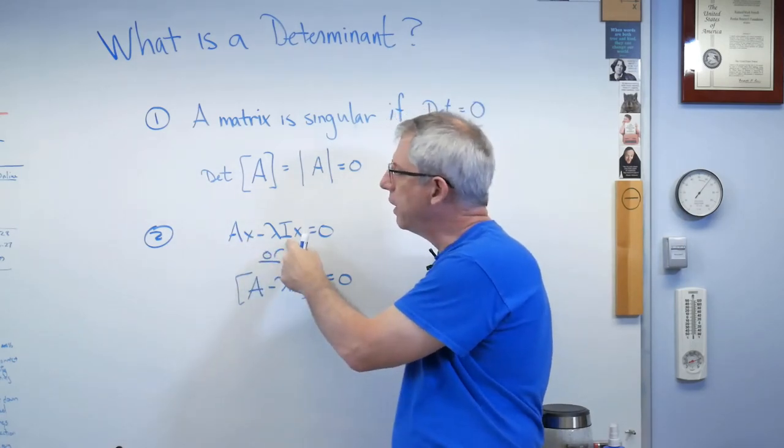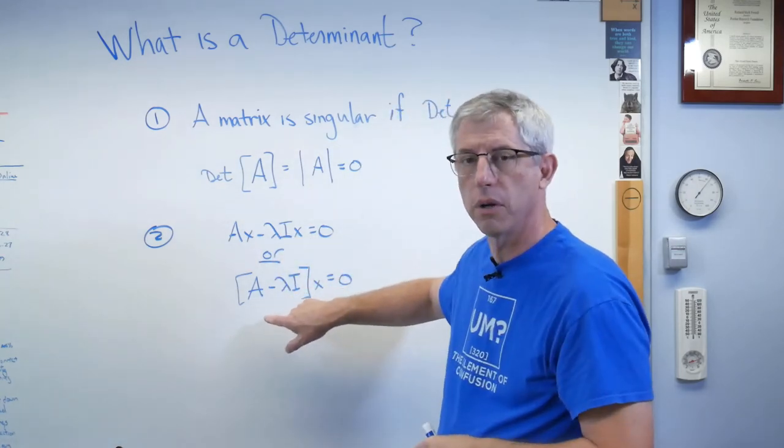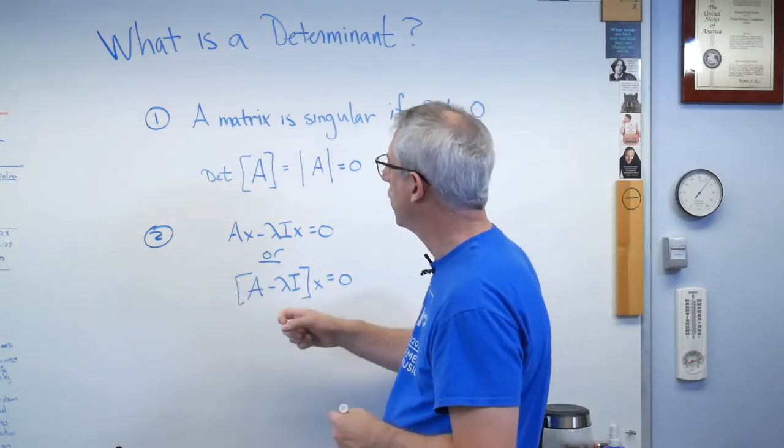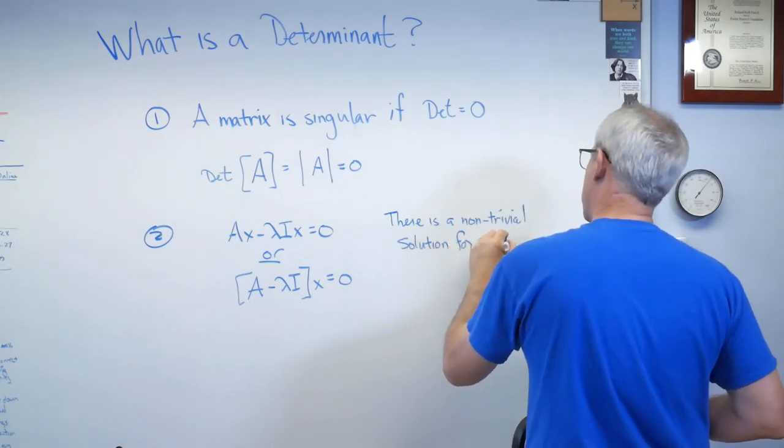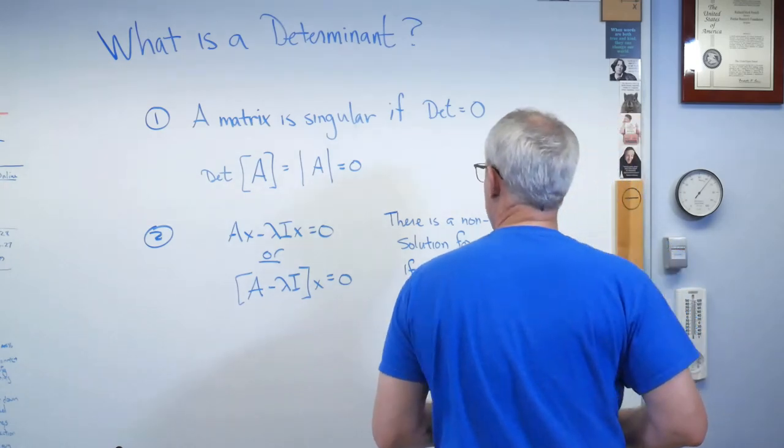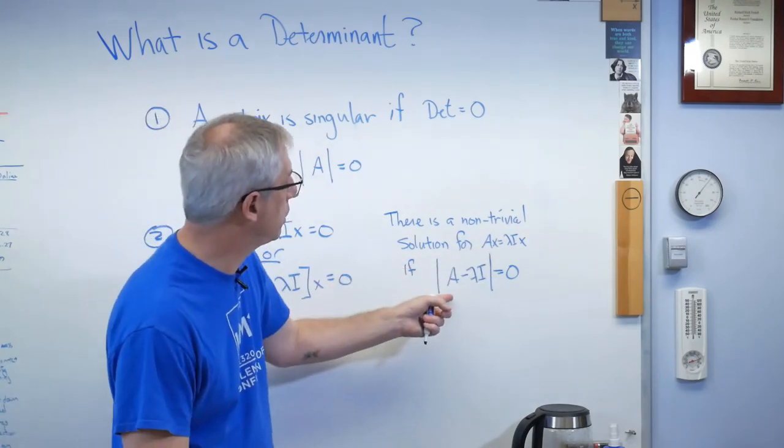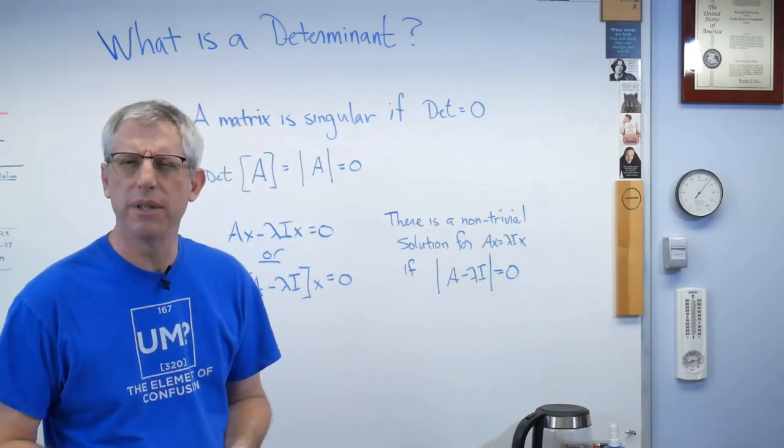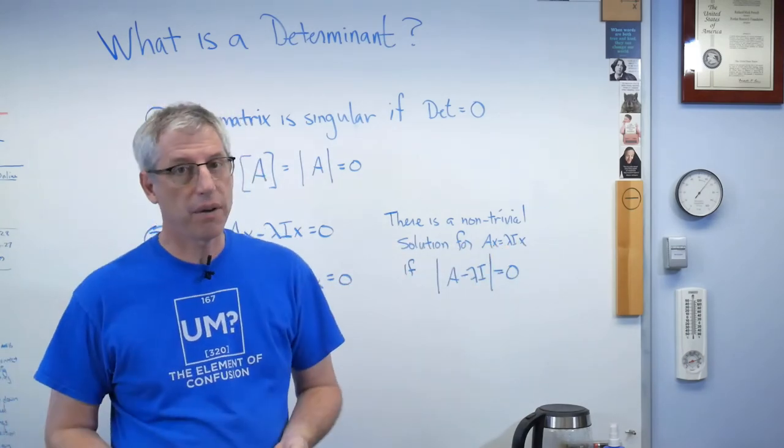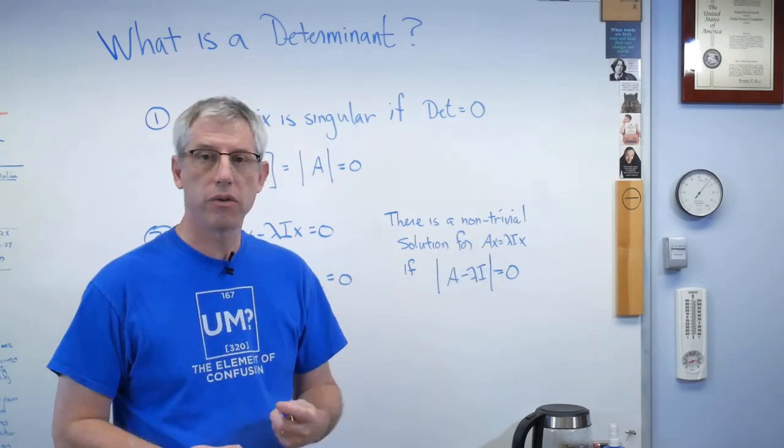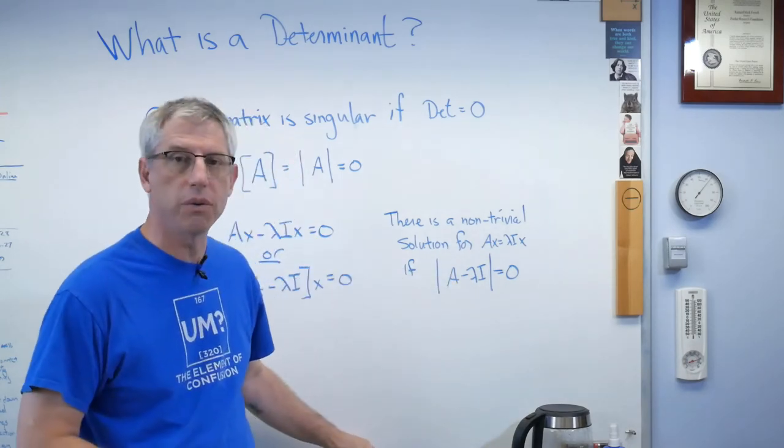That's a matrix, A. That's the identity matrix, I. Lambda is a scalar and X is a vector. There is a theorem called Cramer's Theorem, obviously named after Cramer, that says... This is Cramer's Theorem. There is a non-trivial solution for that equation if the determinant of that matrix right there is zero. What does non-trivial mean? The trivial solution is when all the values of X are zero. Physically, that's not very interesting. That's why the mathematicians call that a trivial solution. If you want a non-trivial solution, that has to be true. The determinant of that matrix has to equal zero.